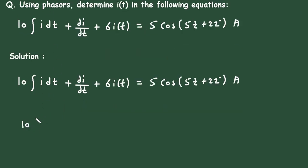This will be 10, integral of this I will be I divided by j omega. Then plus, now derivative of this I will be d by dt will be I into j omega. When we perform integral, that time we have to divide by j omega. And when we perform derivative, that time we have to multiply by j omega. Then plus 6 capital I is equal to, now here this is already in standard form, so it will be 5 at an angle 22 degree ampere.